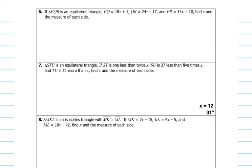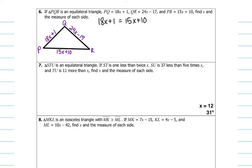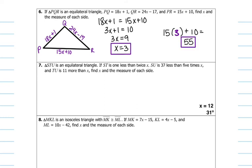Number six: if triangle PQR is an equilateral triangle, with PQ, QR, and PR given as binomials, find X and the measure. Draw the diagram and place the binomials where they belong. If it's equilateral, pick any two and set them equal to each other. Subtract 15X to the left, subtract 1 to the right, divide by three — X equals 3. Then plug 3 back into any of the binomials: 45 plus 10 is 55. So the length of each side is 55 and X equals 3.